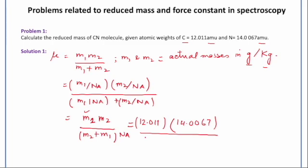So what is m1 and m2 over here? 12.011 plus 14.0067. And I need to multiply this by the Avogadro number. So it is 6.023 into 10 raised to the power 23.